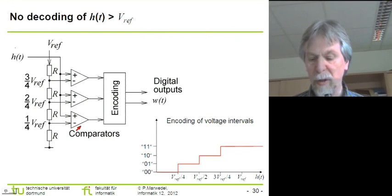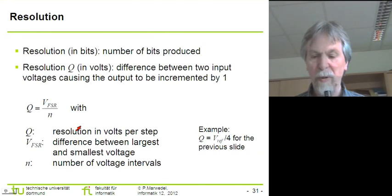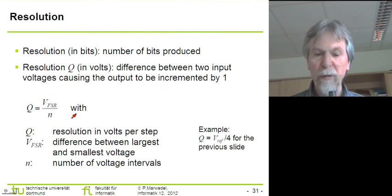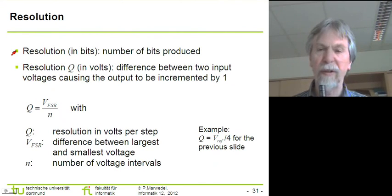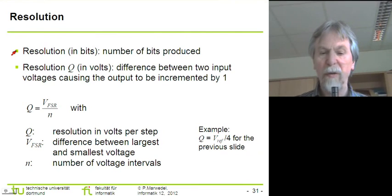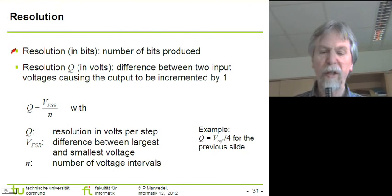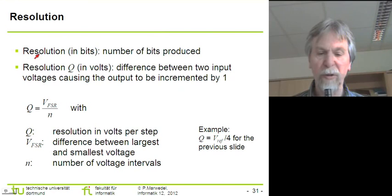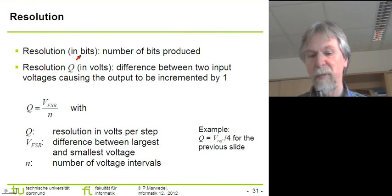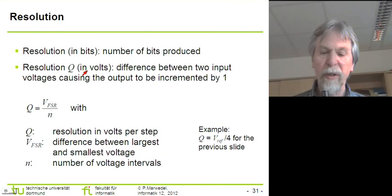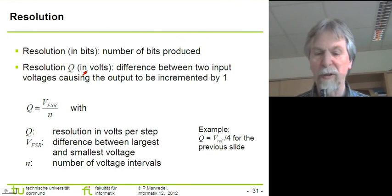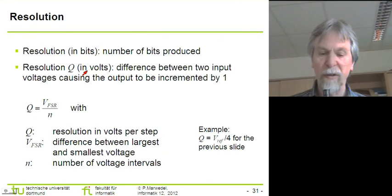We see that we need quite a number of comparators, so if we look at the complexity, we come to the conclusion that there are quite a number of components. If we evaluate the characteristics of this device, we talk about the resulting resolution — where the term resolution is actually somewhat ambiguous, because we can measure it in terms of two different quantities: the number of bits we are generating, and the voltage difference between two adjacent digital values.